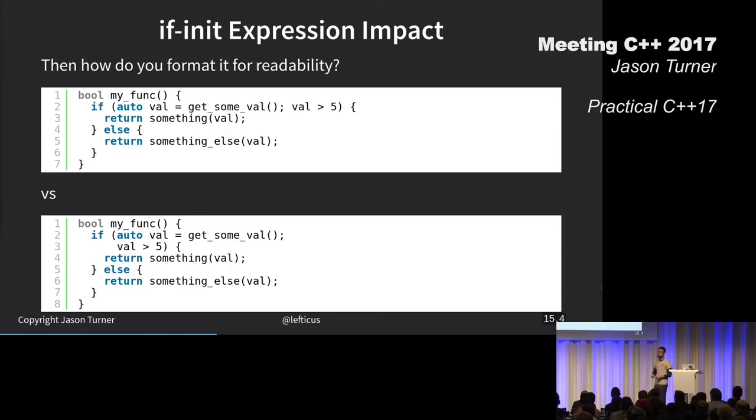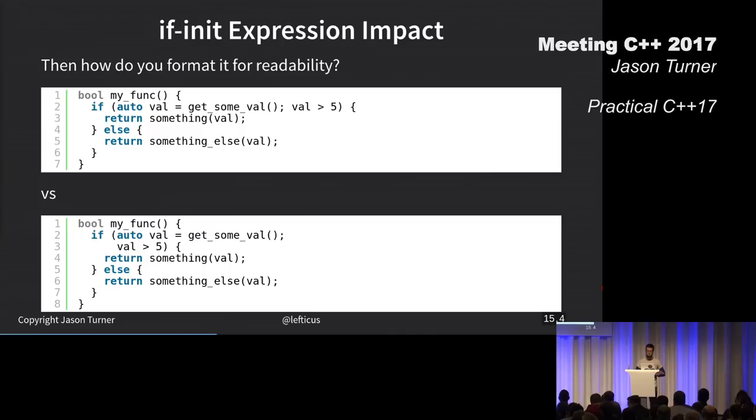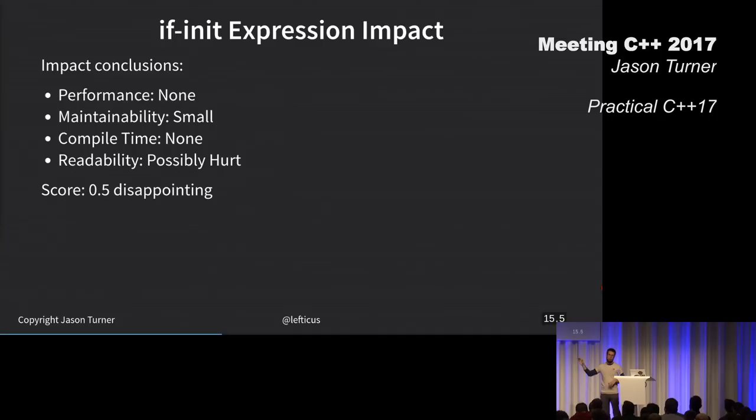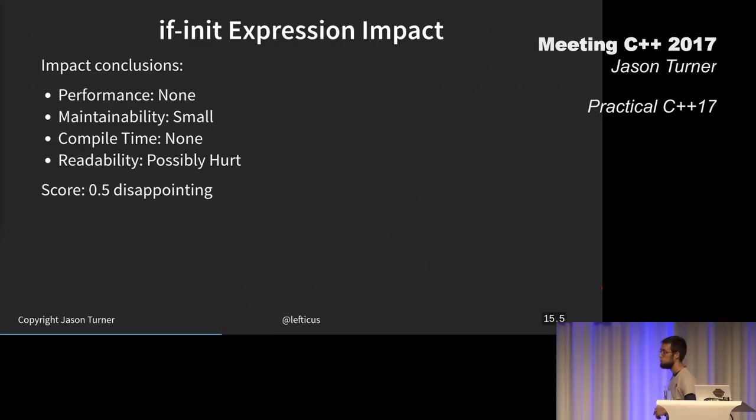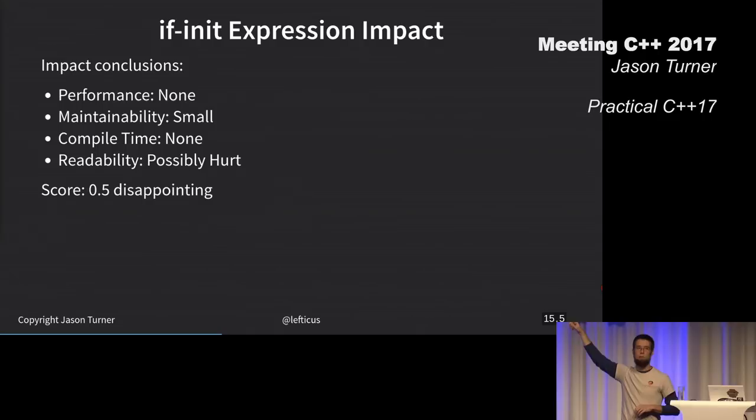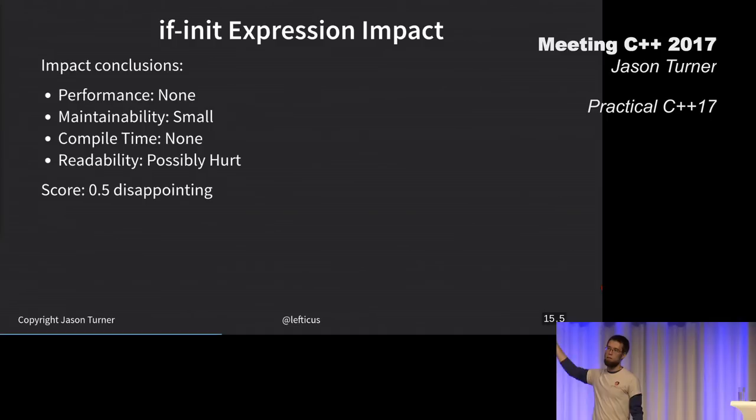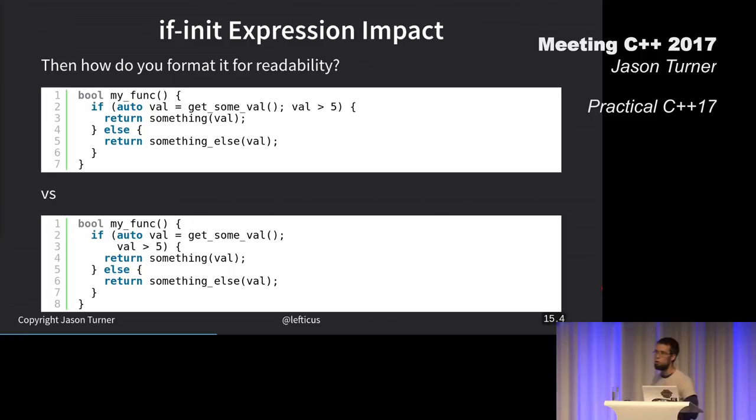I said it had no performance impact. Theoretically, it could. If this did actually help you reduce the scope of your variables in a meaningful way, then it could help the compiler reason about the lifetime of your objects. But a bit of a maintainability issue. I feel like if init expressions hurt readability in many cases because we're not used to them yet. When I'm going back and I'm reading this top version, I'm like, wait, why is there a semicolon in the middle of my if statement?